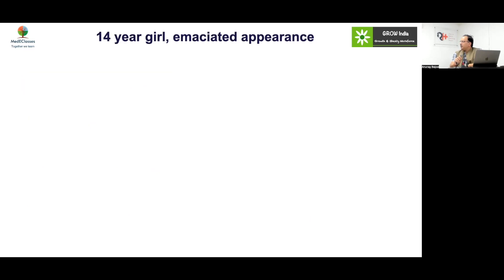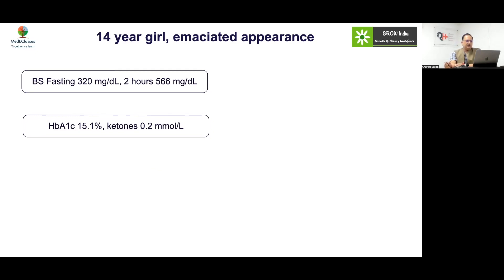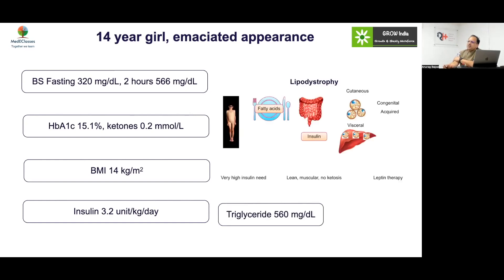Case 13: A 14-year-old girl with emaciated appearance, very high fasting blood sugar, 2-hour glucose 566, very high HbA1c, ketones negative, very lean BMI. This is a classical presentation of lipodystrophy. Insulin requirements will be very high. In this scenario, consider the addition of leptin, because otherwise treatment is very difficult.